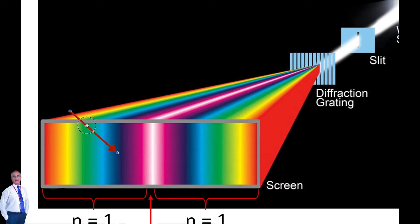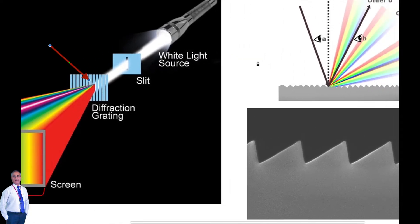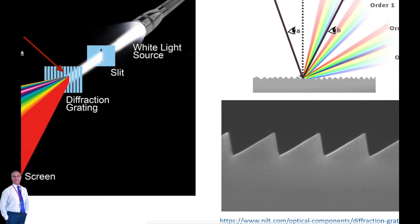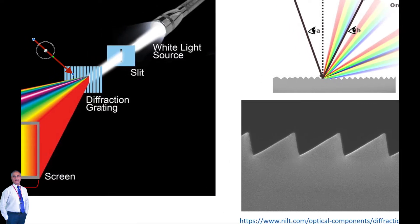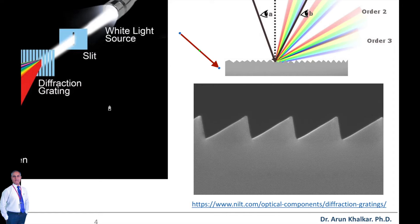A diffraction grating is an arrangement consisting of a large number of parallel slits of the same width, separated by equal opaque spaces. Normally, gratings are constructed by ruling equidistant parallel lines on a transparent material such as glass with a fine diamond point. The ruled lines are opaque to light while the spaces between any two lines are transparent and act as slits — this is known as a plane transmission grating. When the spacing between the lines is of the order of the wavelength of the light, an appreciable deviation of the light is produced.